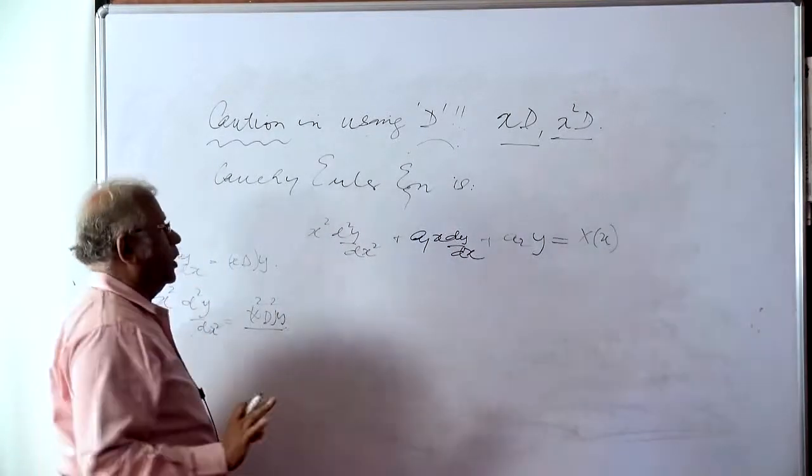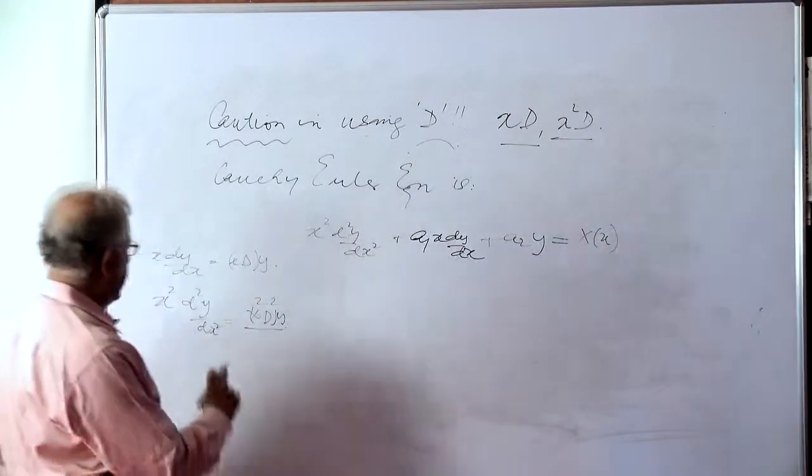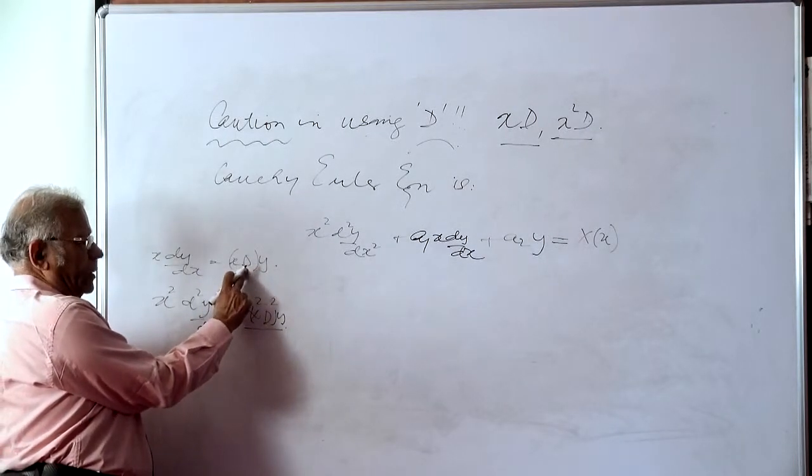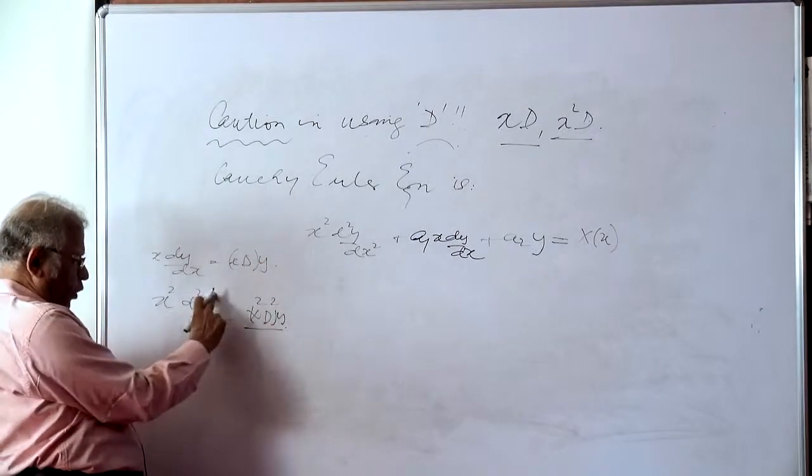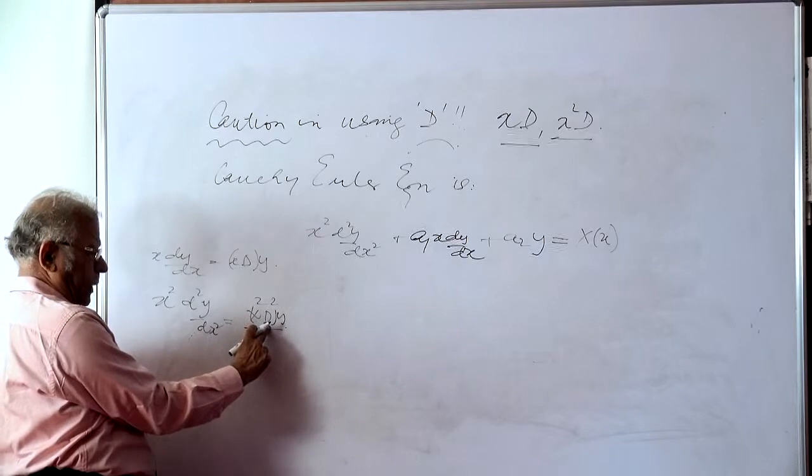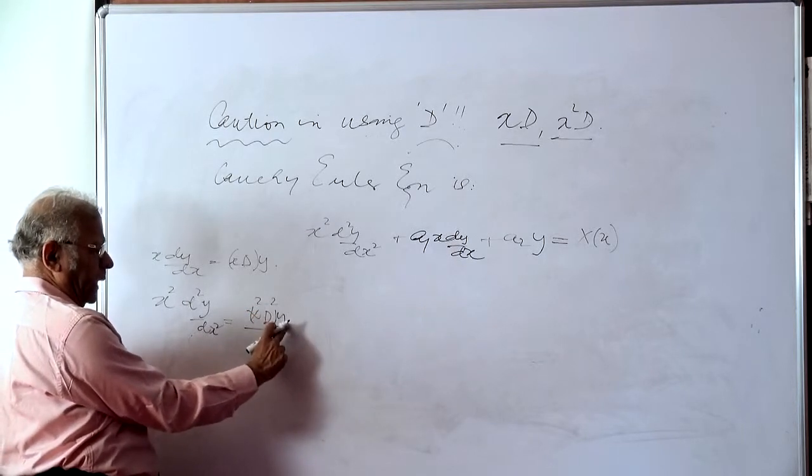Now, using the d operator, we have written that x dy/dx is represented by xd operating on y, and x squared d²y/dx² is written as x squared d² or x squared d² operating on y.